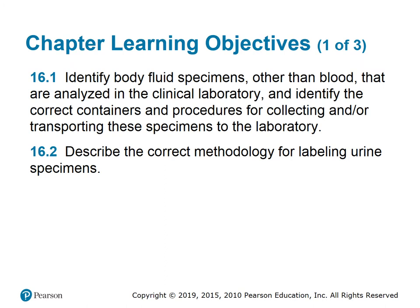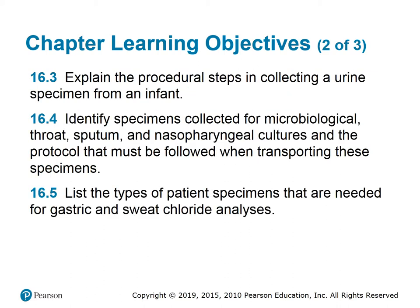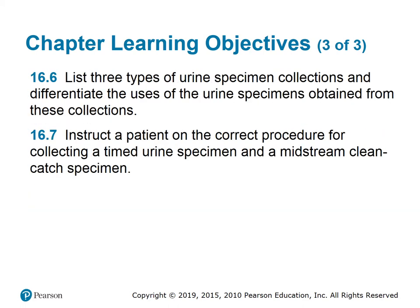Today we're going to be going over Chapter 16. The learning objectives are to explain the procedural steps in collecting a urine specimen from an infant, identify specimens collected for microbiological throat, sputum, and nasopharyngeal cultures and the protocol that must be followed when transporting these specimens. List the three types of patient specimens needed for gastric and sweat chloride analysis. List three types of urine specimen collections and differentiate their uses. Instruct the patient on the correct procedure for collecting a timed urine specimen and a midstream clean catch specimen.